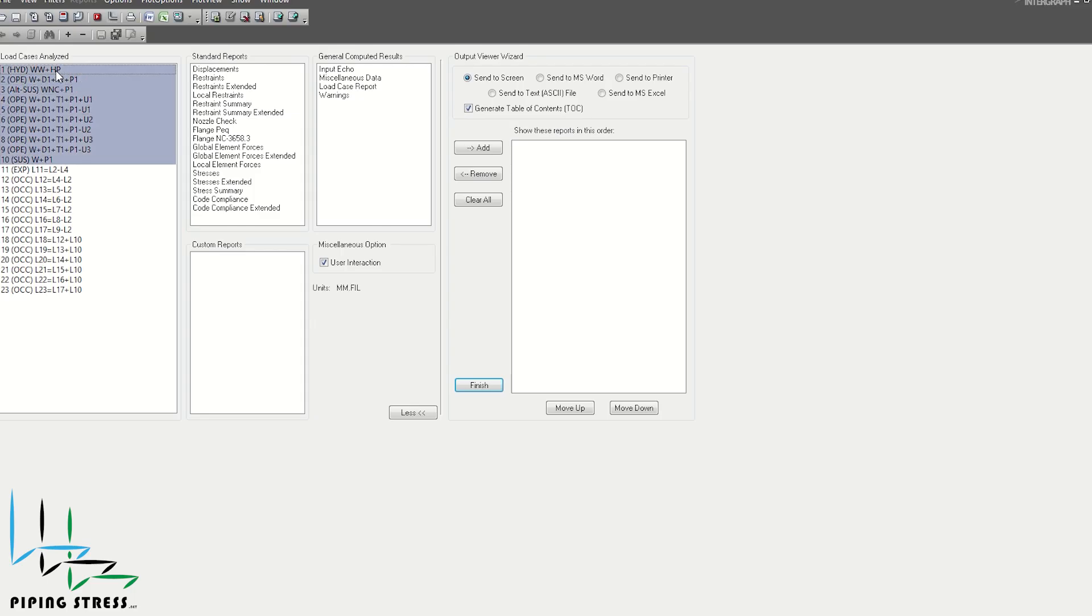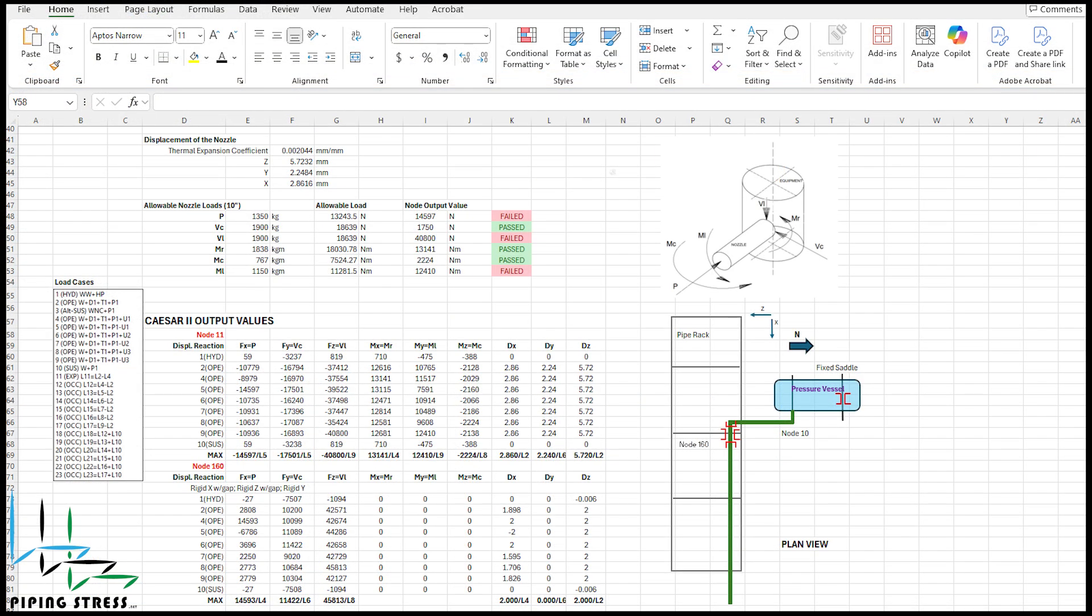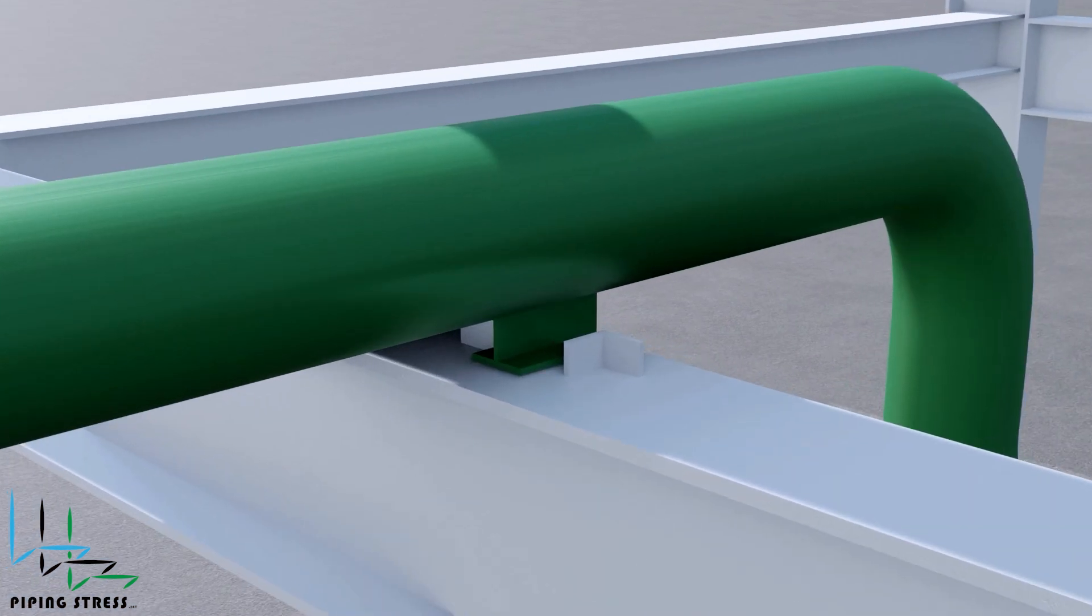Now, let's evaluate the results using the restraint summary. Node 10 is the number assigned to the nozzle. Looking at this node, we see that the nozzle and the guide are interacting along the z-axis, which causes excessive loads on both the nozzle and the guide. Therefore, placing a guide on the first pipe shoe on the pipe rack was an incorrect decision.